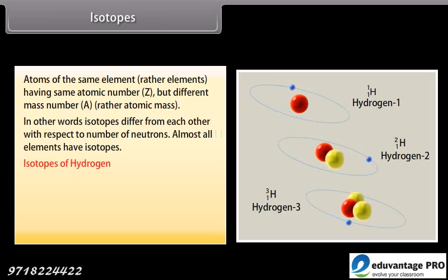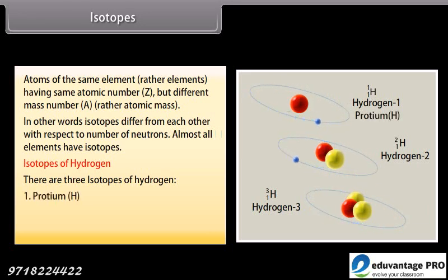Isotopes of hydrogen. There are three isotopes of hydrogen: Protium, Deuterium, and Tritium.